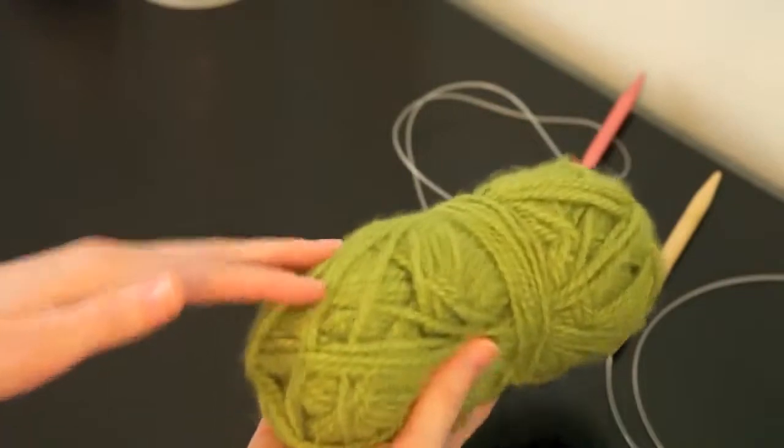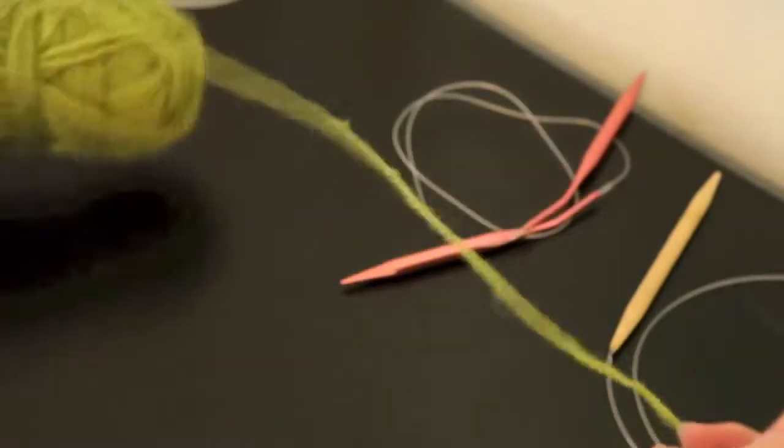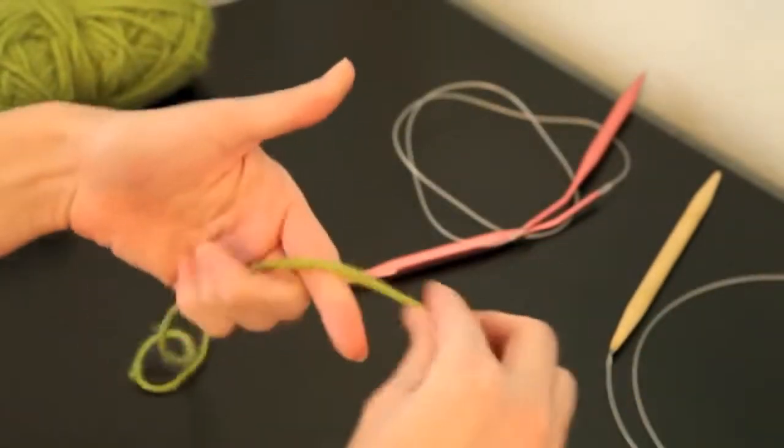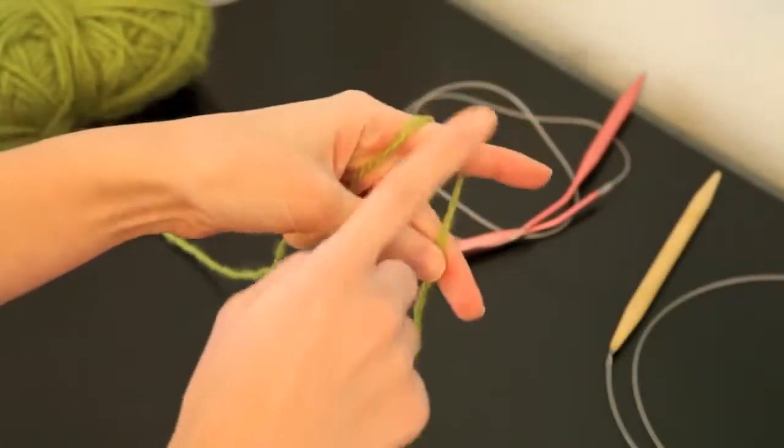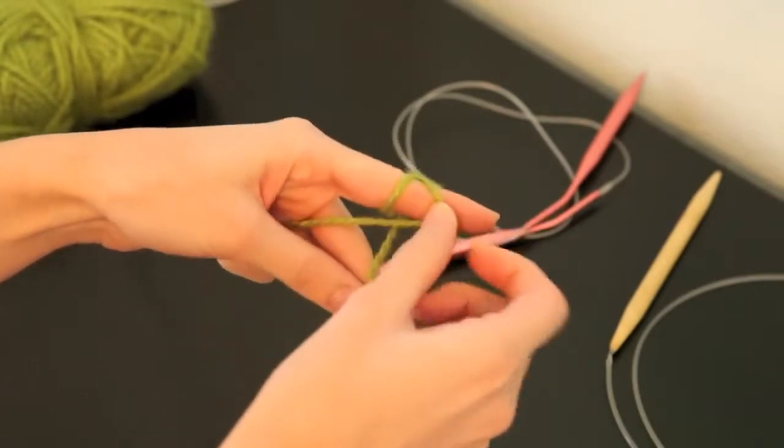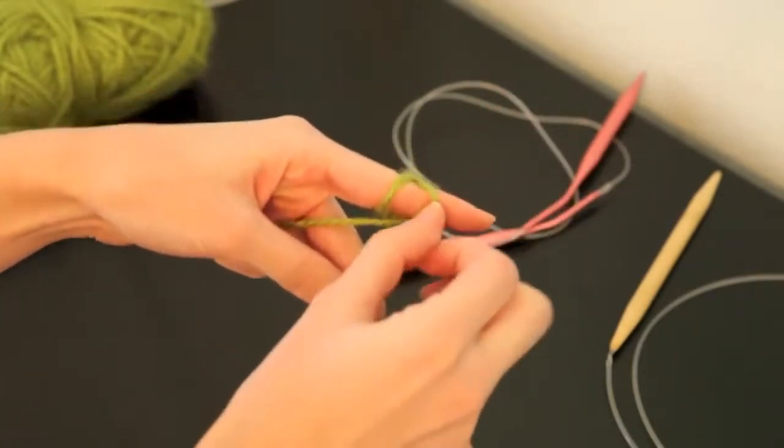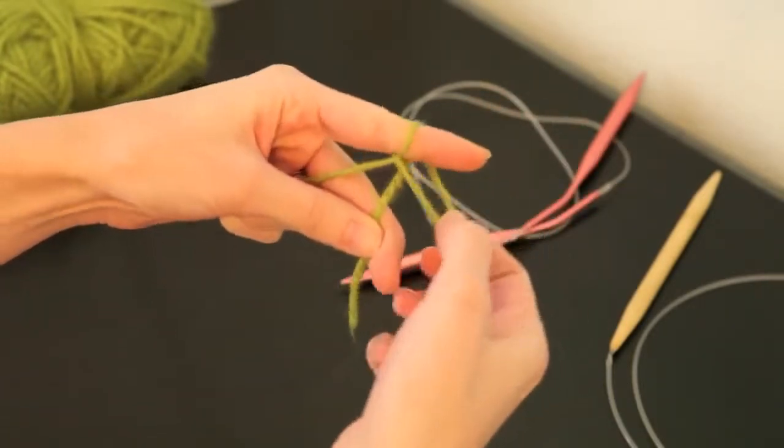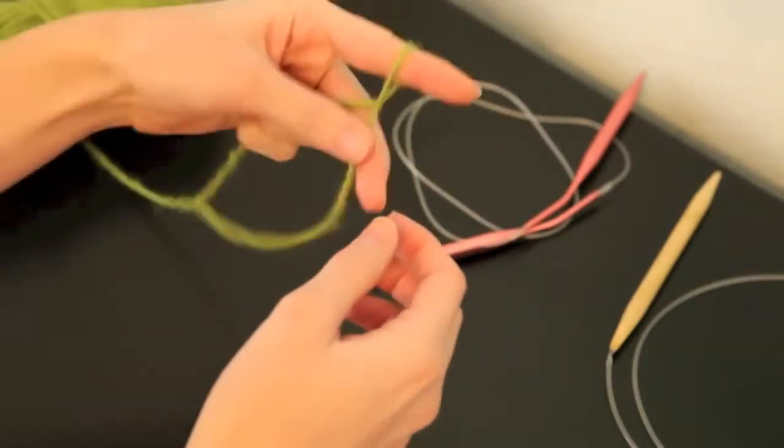The first thing we're going to do is grab our ball of yarn and make a slipknot. So wrap your yarn around your finger two times, pull the back loop over the front loop, and then the new back loop over and off of your finger. Tighten it up, and that's your slipknot.